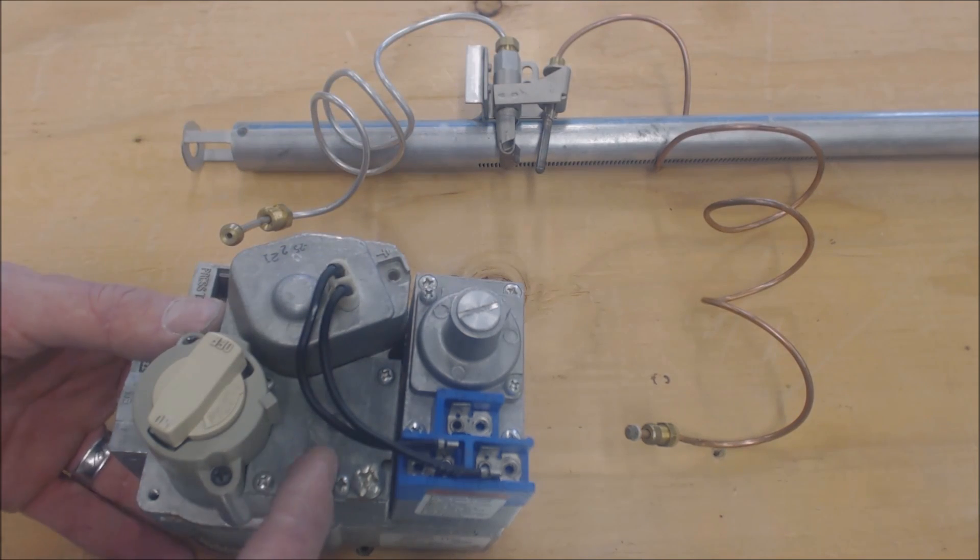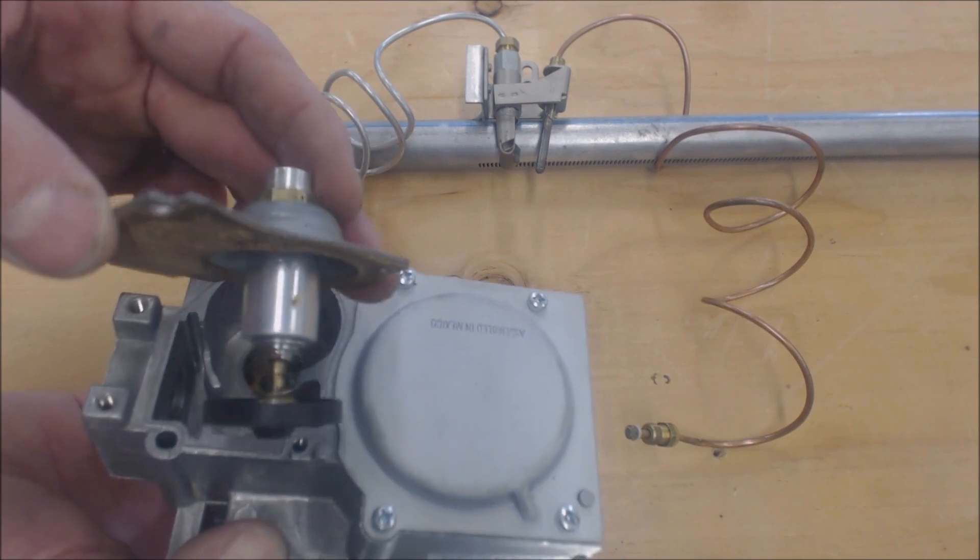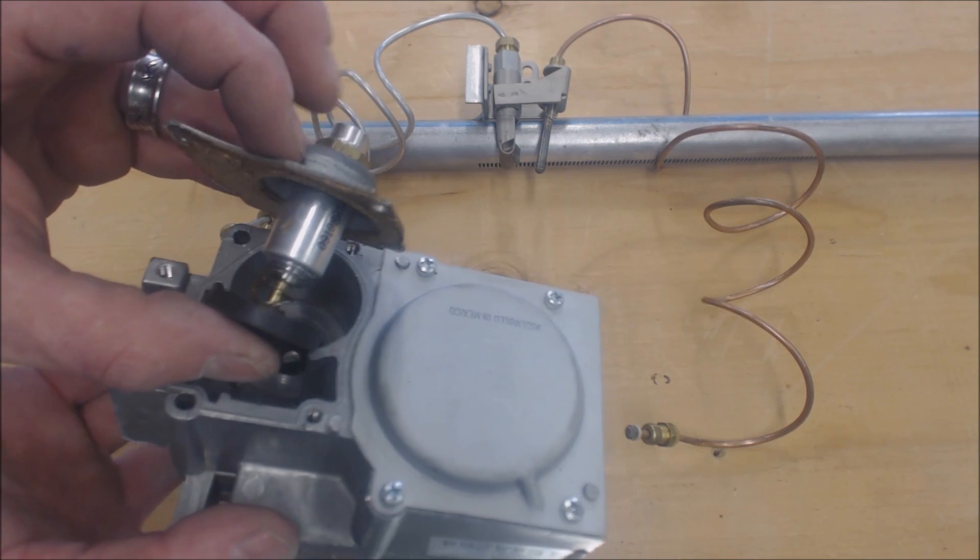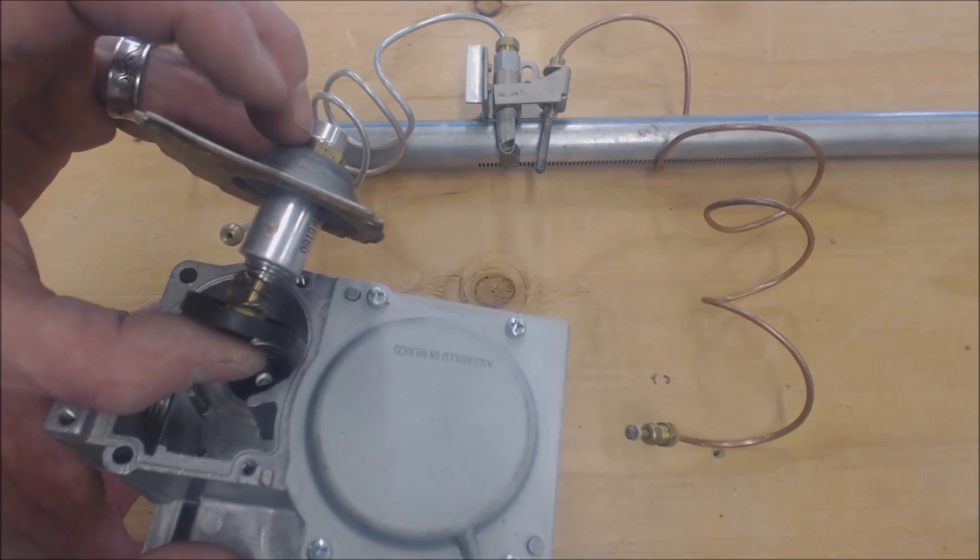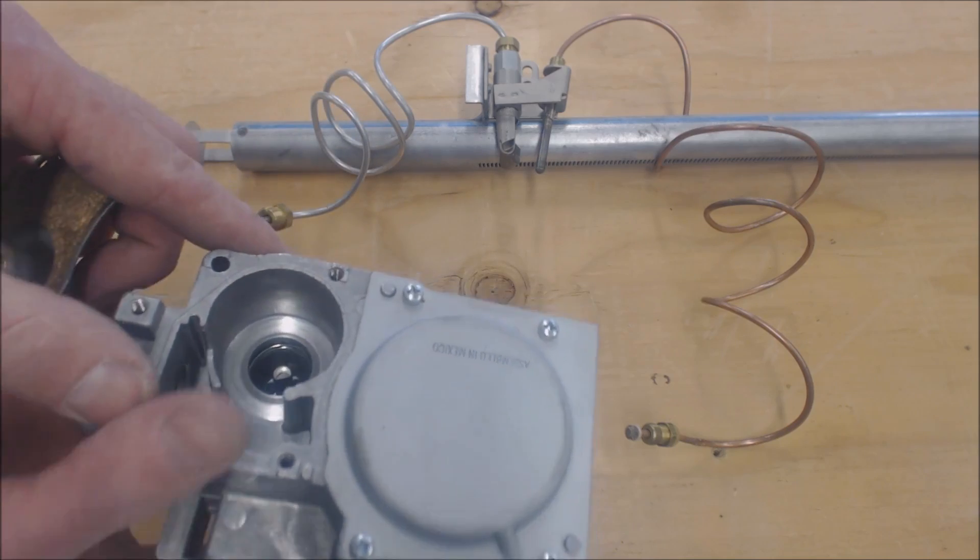This solenoid is powered by DC millivolts. Any time you press this button, you're depressing this just like this, allowing gas to flow through.